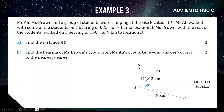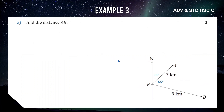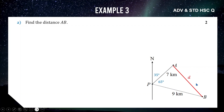Now for part (b): find the distance from A to B, calling it d. There's no right angle, so SOHCAHTOA is off the table. We have one angle (65°) and two sides (7 and 9), so we use the cosine rule: d² = 7² + 9² − 2 × 7 × 9 × cos 65°. Taking the square root gives approximately 8.76 km. The question doesn't specify rounding, but since this value feeds into the next part, we keep it as 8.76 to stay accurate.